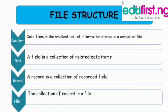Now let's talk about file structure. We've discussed data items, fields, records, and files. The first and smallest is the data item — the smallest unit of information stored in a file. The next is a field, which is a collection of related data items, like a name, date of birth, or address. What makes up a field is known as a data item.